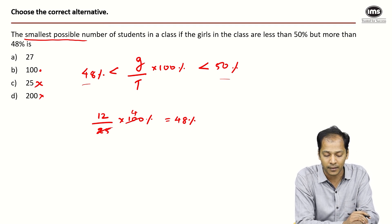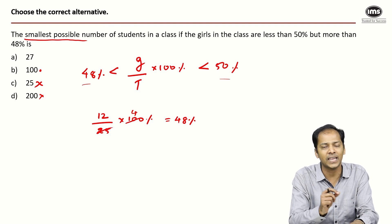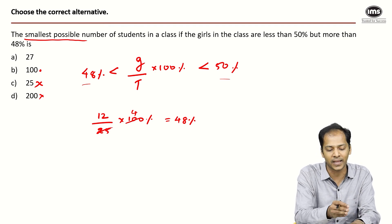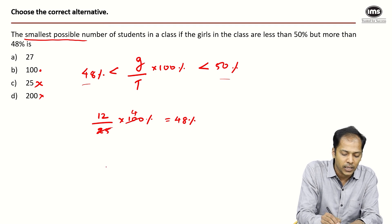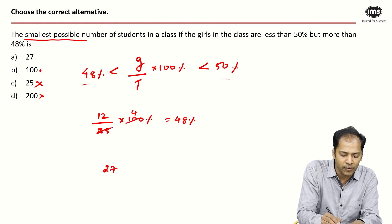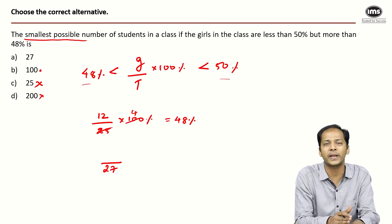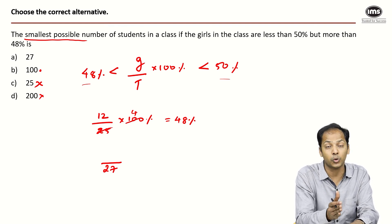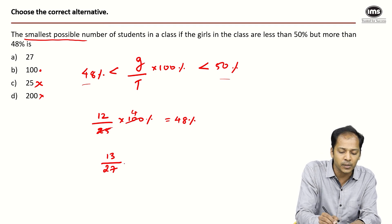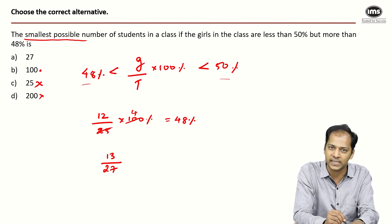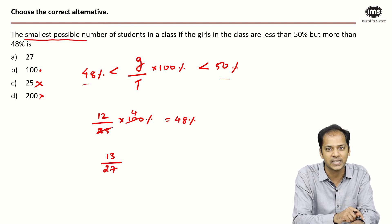I just have to check for option A. If option A can give me an answer, great, otherwise my answer would be option B. Option A is 27. 50% of 27 is 13.5, the closest number of girls I can take is 13. I'll just calculate the percentage value of 13 out of 27.